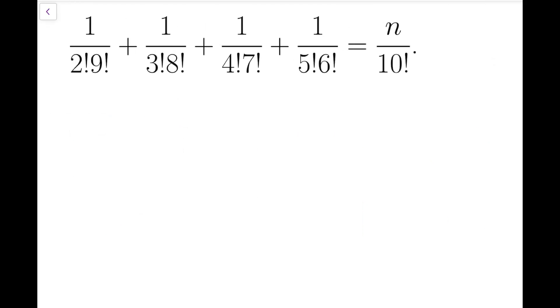Now back to the main problem. The key to solve this equation is to notice that the entries in the denominators, say 2 pairing with 9, 3 with 8, 4 with 7, and 5 with 6, they have sum to be 11.